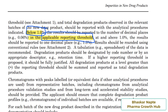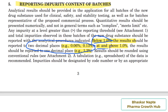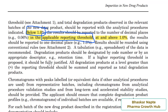Now, if the impurity content is at or above one percent, the result should be reported to one decimal place — for example, 1.3%. When impurity content is at or above one percent, there is no need to consider the applicable reporting threshold; one digit after the decimal is sufficient. This is similar to the drug substance requirement. The difference only applies when the impurity content is below one percent.